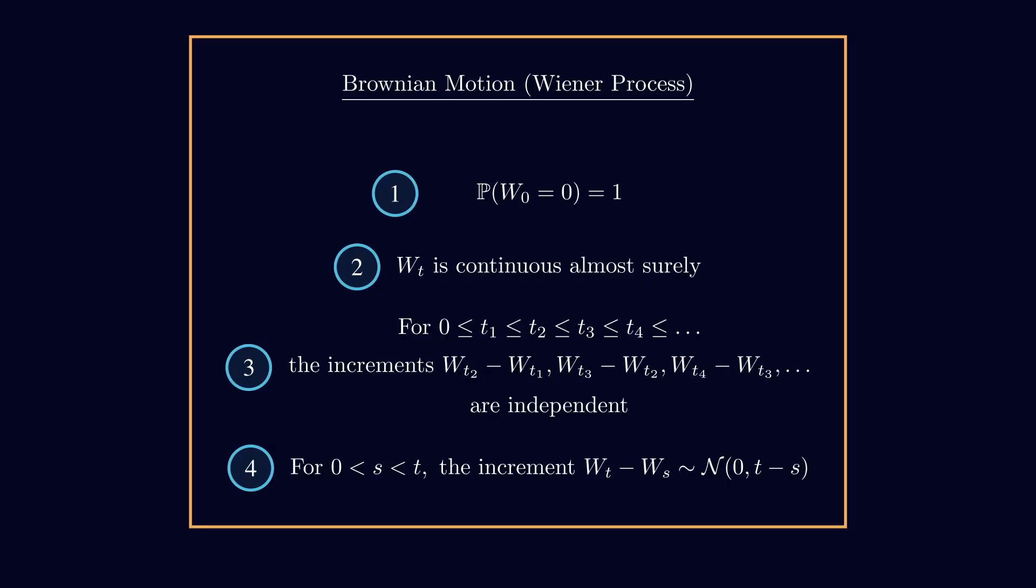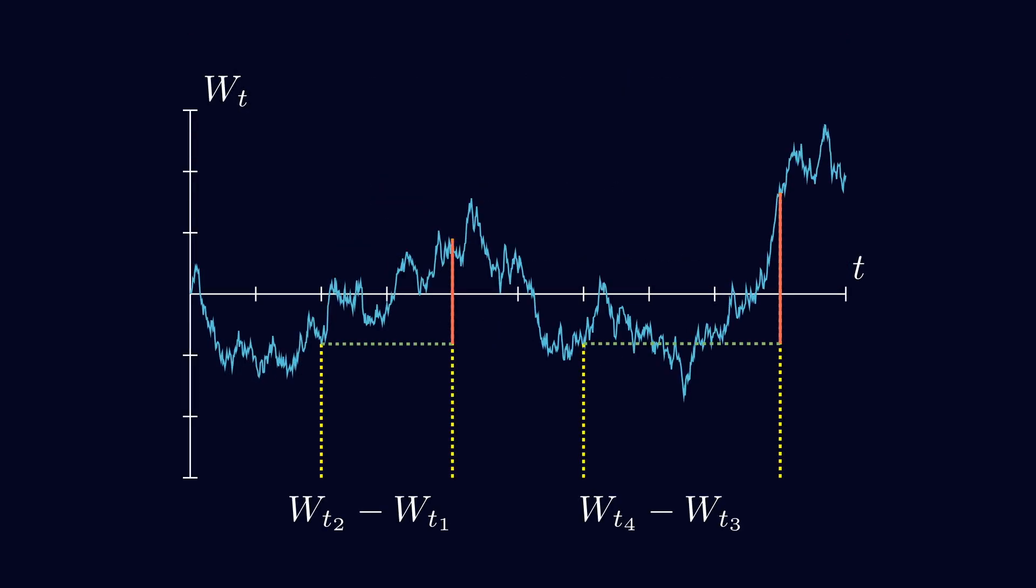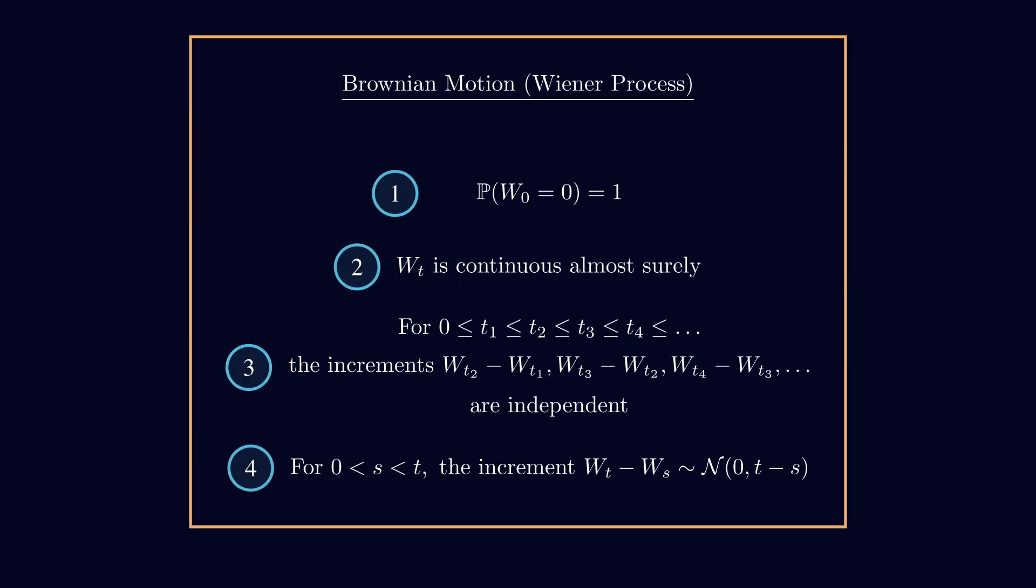And when I say it's continuous, it doesn't mean that it is differentiable. In fact, Brownian motion is not differentiable. I like to think about Brownian motion being similar to the absolute value, because the absolute value at zero is very sharp with a pointy edge, but for Brownian motion, it's like that everywhere. And of course, the absolute value is not differentiable at zero. And the third property of Brownian motion is that each increment is independent, so whatever happens in one time interval doesn't affect what happens in another. And the last property, probably the easiest one to visualize, is that the difference between the values at two different times follows a normal distribution, with a mean of zero and a variance of t minus s.